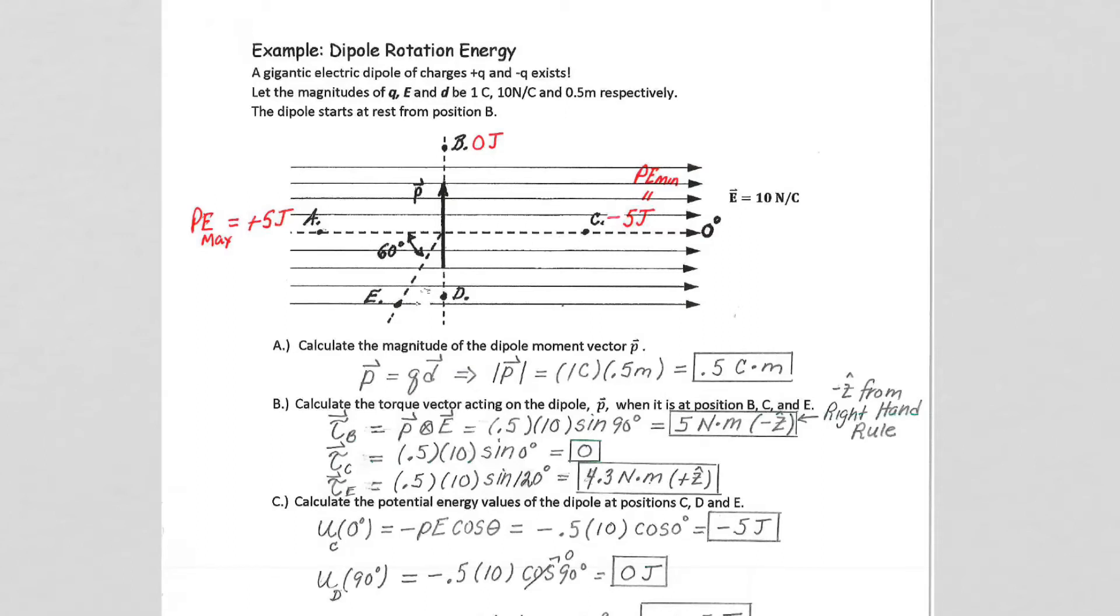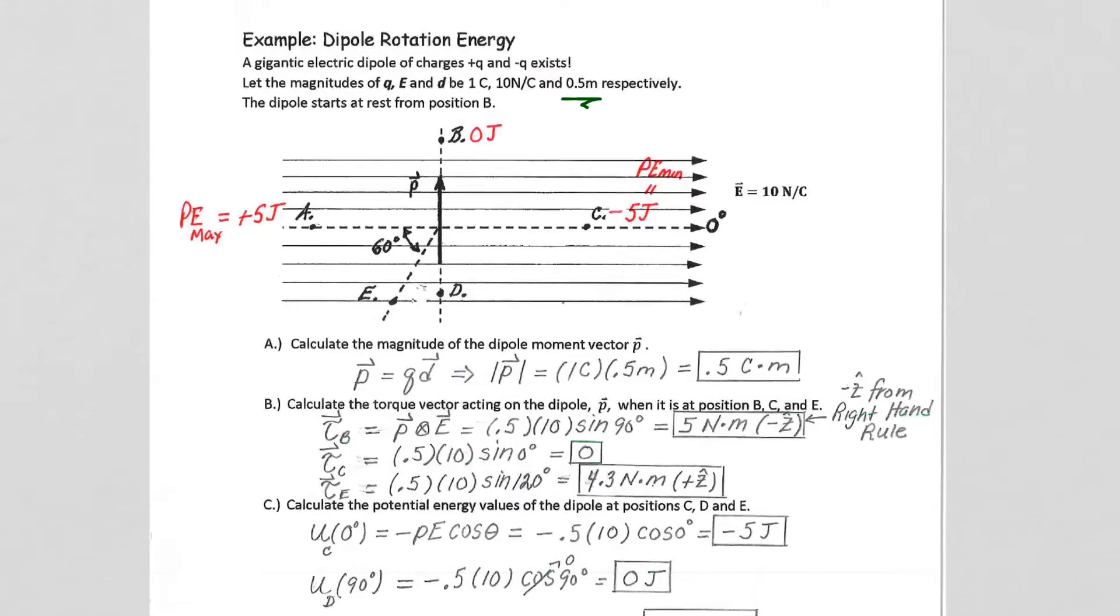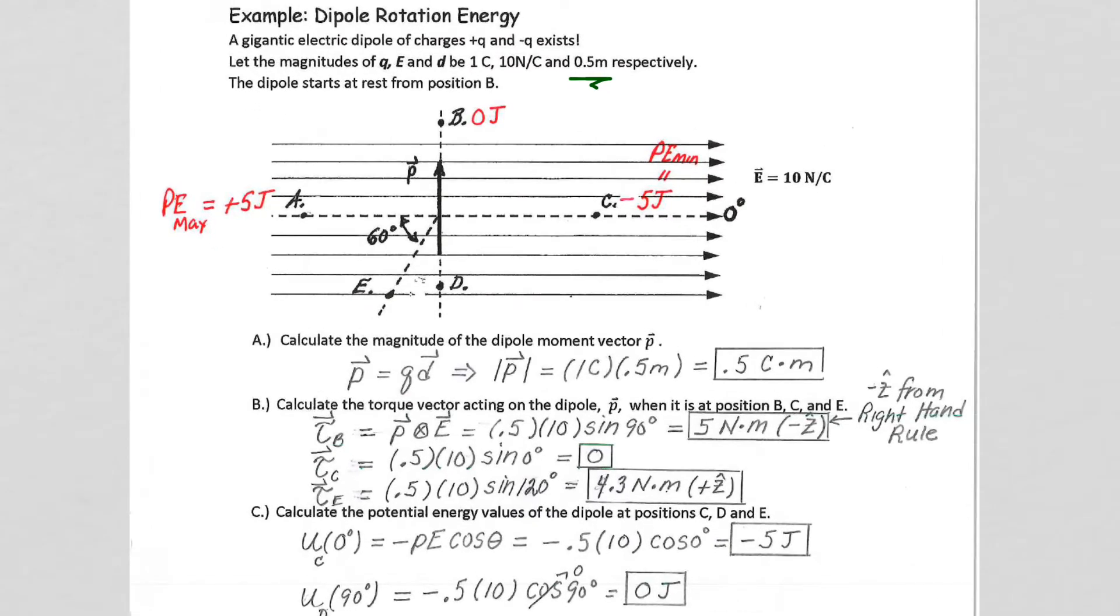All right, let's take a look at this problem. We're given a gigantic electric dipole because the dipole distance is 0.5 meters, so half a meter stick, so it's certainly not a typical atomic and molecular type of dipole.